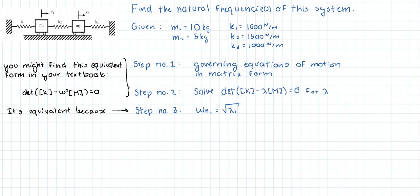Now there's a note on the left side that says that in your textbook you might find the same equation but in a different form, and the reason is that instead of putting the lambdas they put the frequencies squared, and it's equivalent of course because of step number three. So let's get to it.